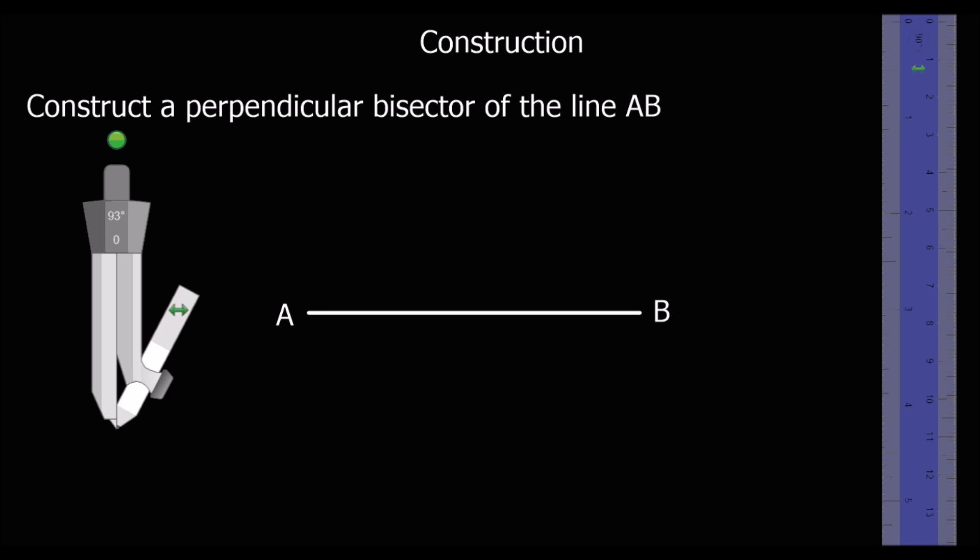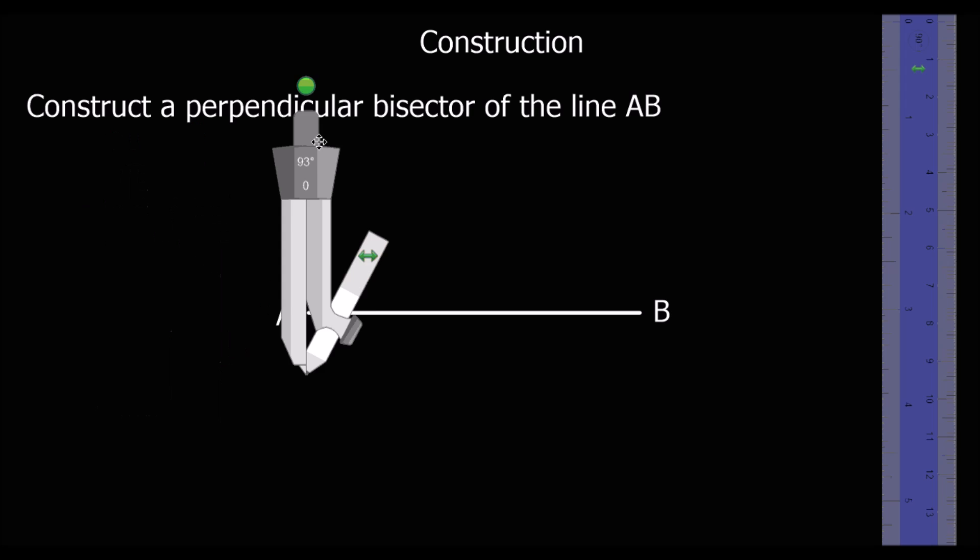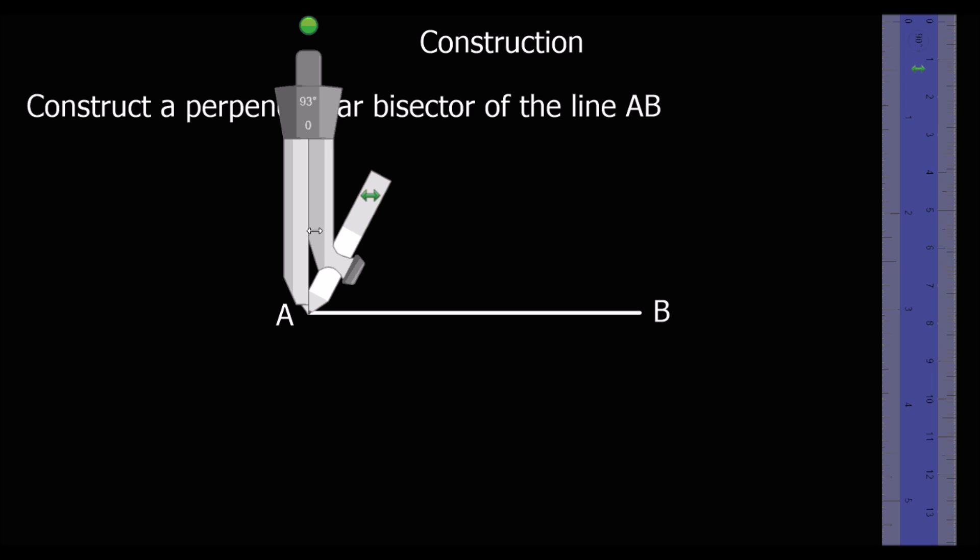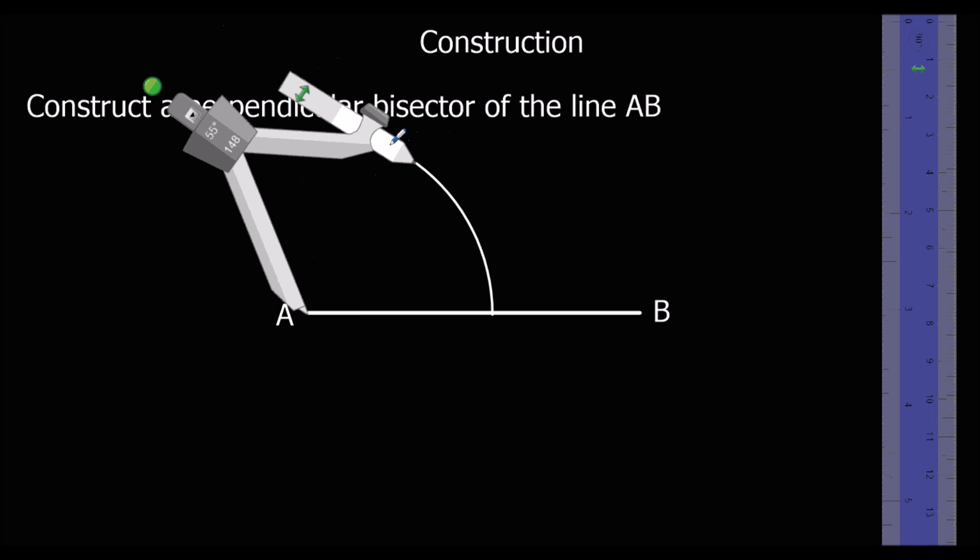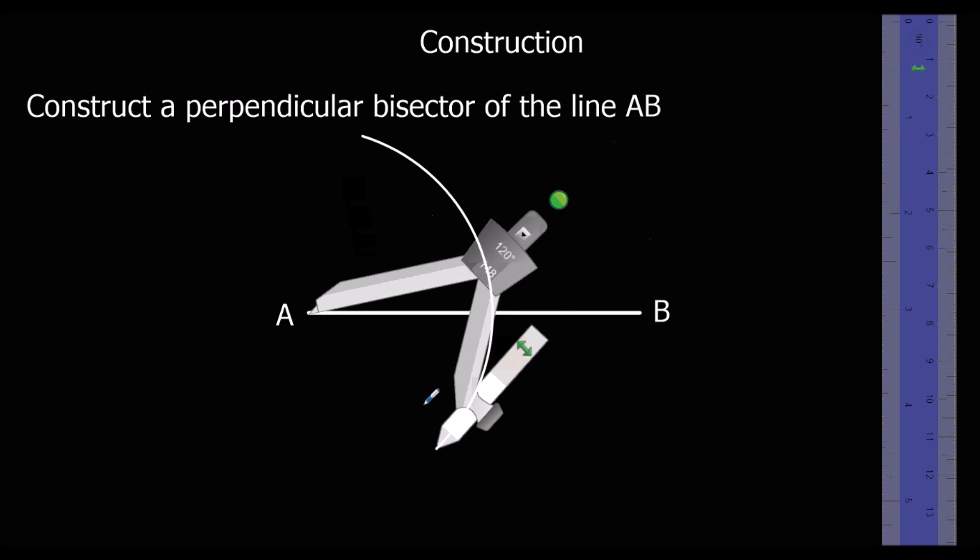To construct a perpendicular bisector, we take our compass and put it firstly on point A. And then we extend it out just over halfway and we draw round along the top and the bottom.